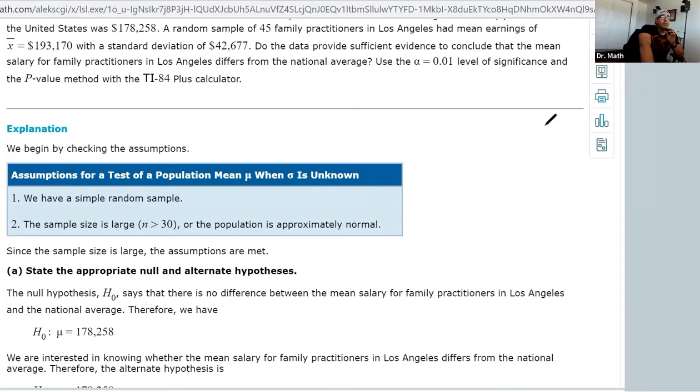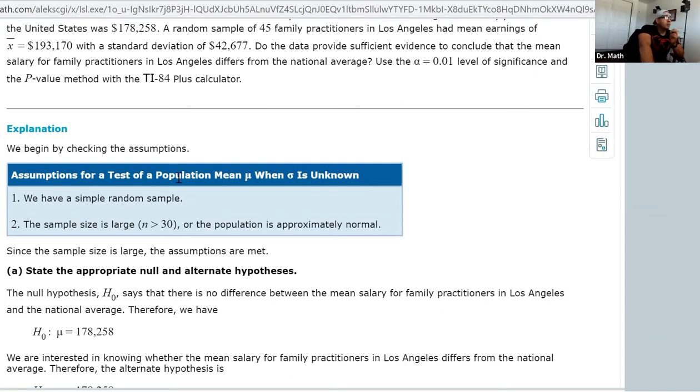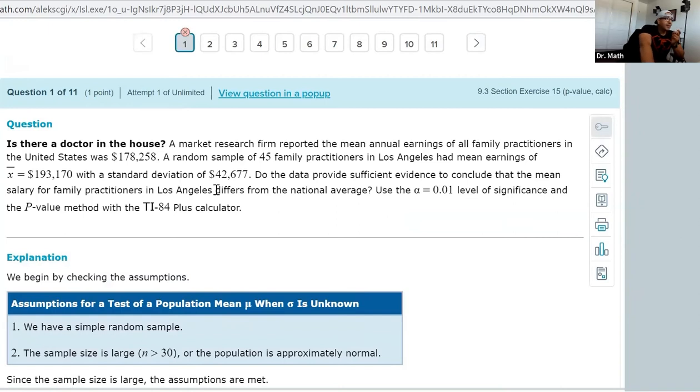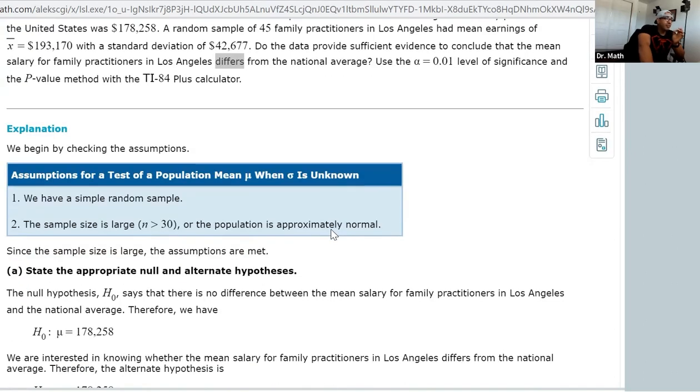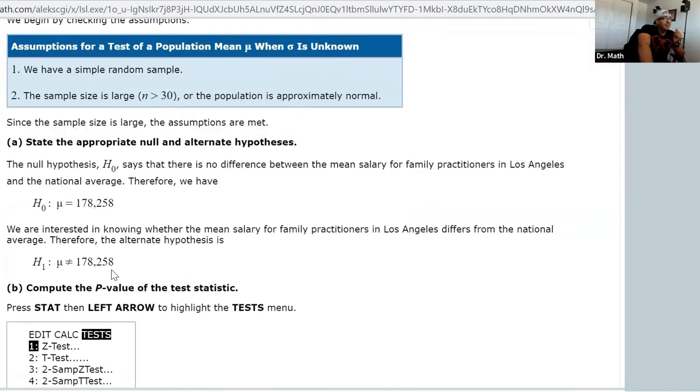I had you underline the word 'differs,' so we want to show is there a difference. Because we underlined 'differs,' that means that our alternate hypothesis says that our mean is not equal to 178. This represents a two-tailed test.